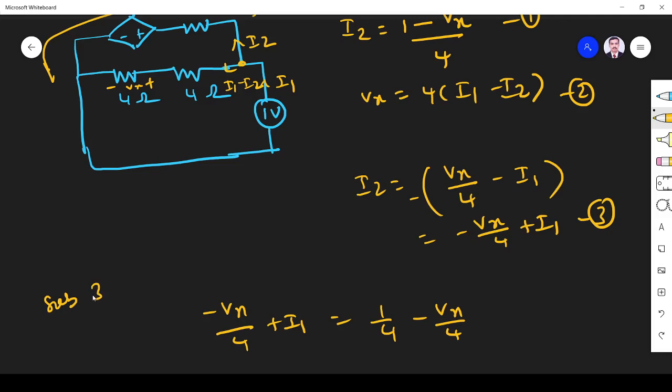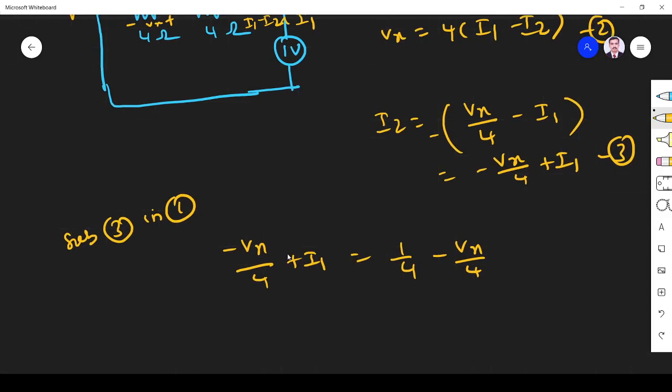Substitute equation 3 in equation 1. So what happens. What we see here is this will be cancelled. I1 is equal to 1 by 4 ampere.